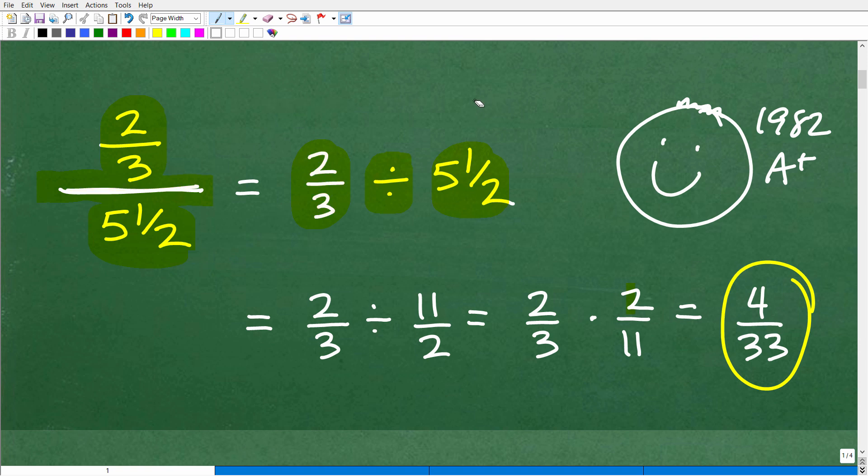Okay, so the first thing we want to do is rewrite this mixed number, 5 and 1 half, as an improper fraction. So how do we do that? Well, 5 and 1 half is the same thing as 2 times 5, which is 10 plus 1, or 11 halves. So that's why we're going to rewrite this 2 thirds divided by 5 and 1 half as 2 thirds divided by 11 halves.